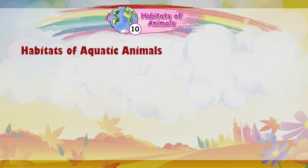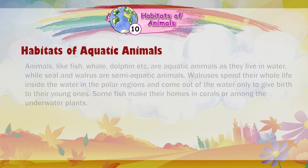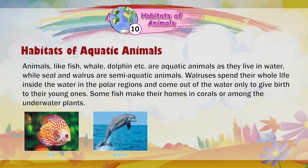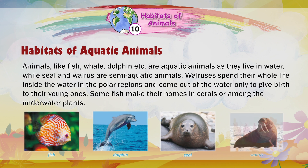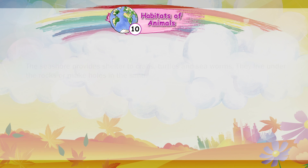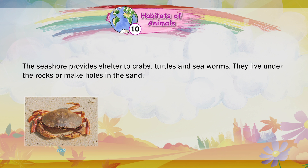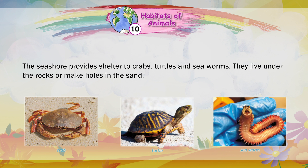Habitats of aquatic animals: Animals like fish, whale, dolphin, etc. are aquatic animals as they live in water, while seal and walrus are semi-aquatic animals. Walruses spend their whole life inside the water in the polar regions and come out of the water only to give birth to their young ones. Some fish make their homes in corals or along the underwater plants. The seashore provides shelter to crabs, turtles, and sea worms. They live under the rocks or make holes in the sand.